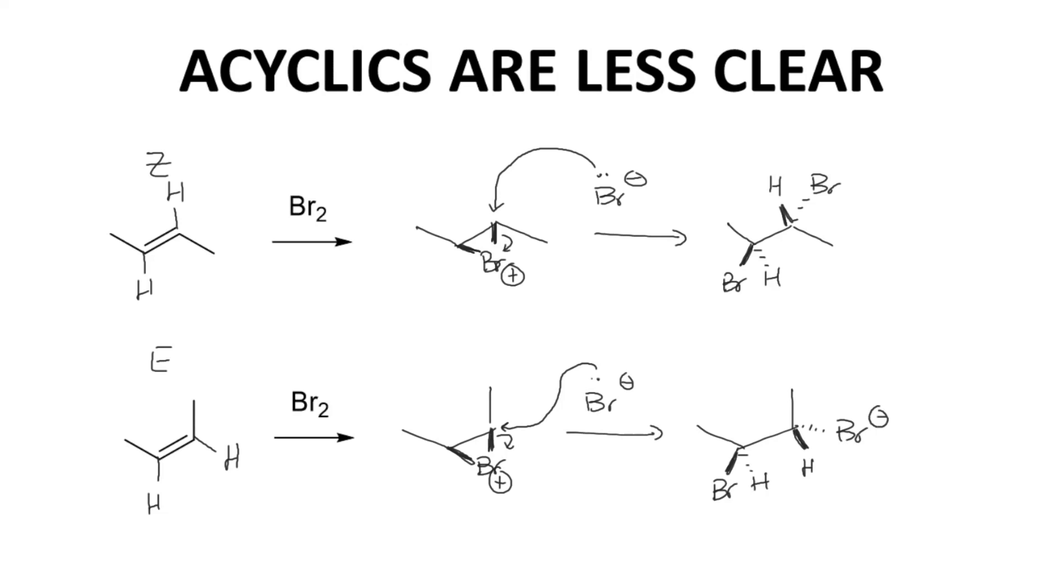These two products look different, but are they different? Yes, they are isomers of one another. They are diastereomers. The top structure is SR and the bottom structure is SS. So the difference in stereochemistry in the starting materials, E and Z, translates to a difference in stereochemistry in the products. How interesting.